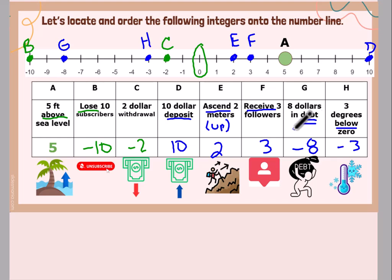$8 in debt. If you're in debt, that means you owe money to somebody or some company. So that means it's going to be a negative $8. So negative 8 would be to the left of 0. Here's my negative 8. And I plotted point G.